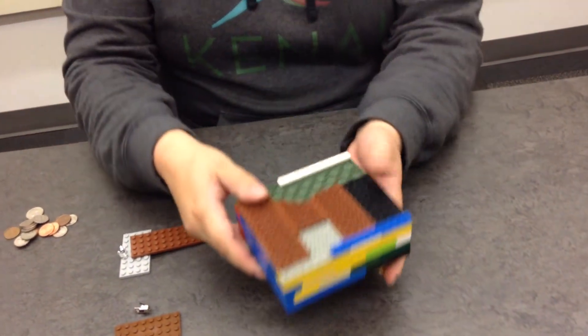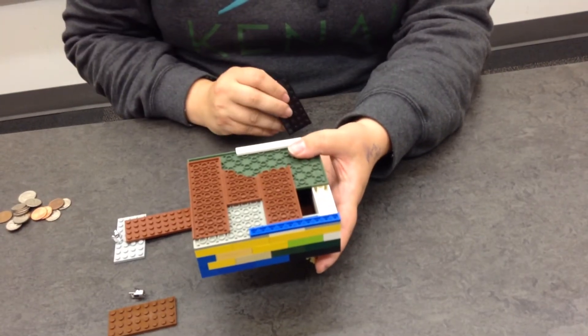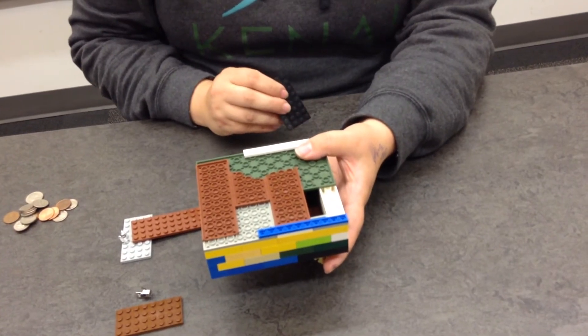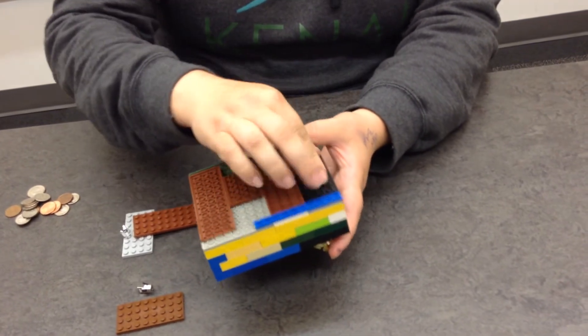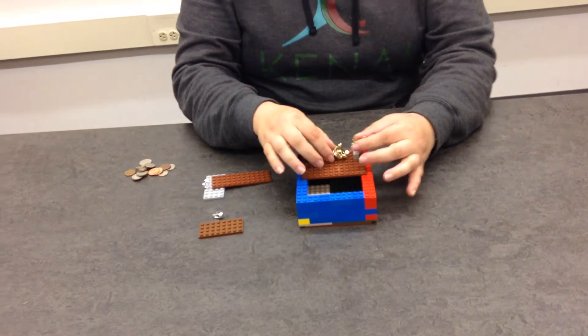And on the bottom here I have a differently colored brick that comes off really easy so I can access my money without having to take the top off if I don't want it. That way I can store lots of stuff for use later.